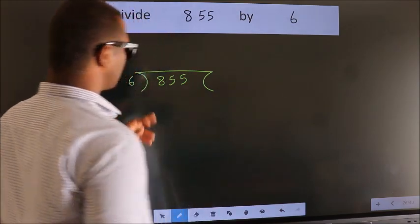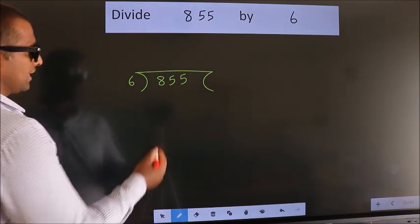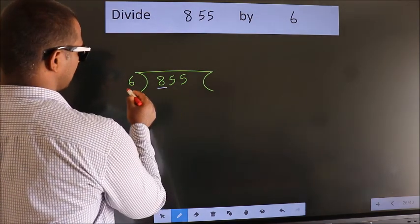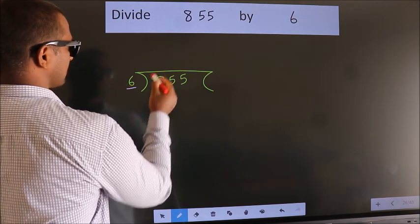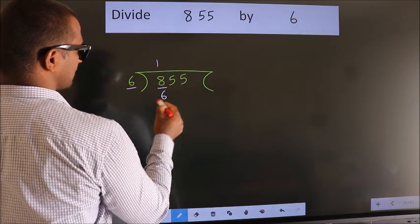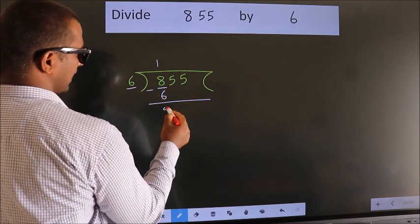This is your step 1. Next, here we have 8, here 6. A number close to 8 in the 6 table is 6 once, 6. Now we should subtract. We get 2.